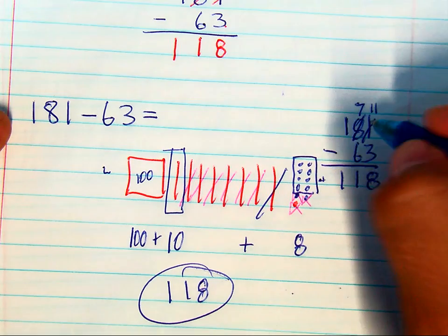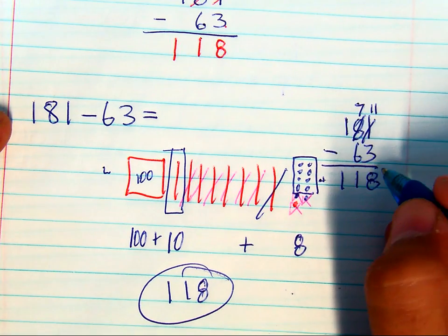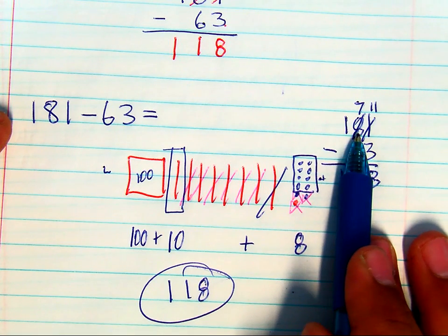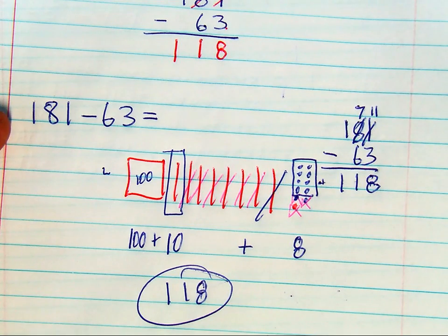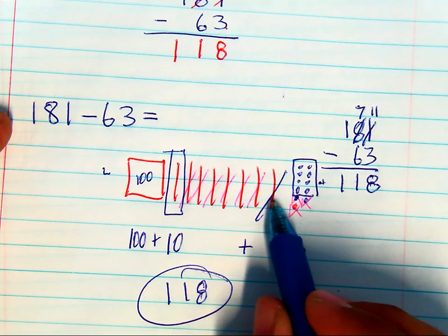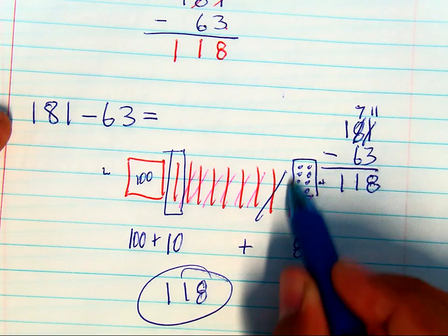But if you only teach them these steps, they're not going to understand completely why they're taking that 8 and making it a 7. So we want to make sure they can see that they're taking one away and giving it to the ones.